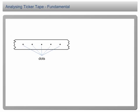Analyzing ticker tape, fundamental. In previous lesson, we learned that a ticker tape timer consists of a vibrator that vibrates 50 times in 1 second.